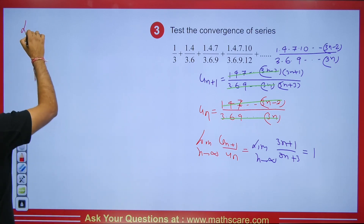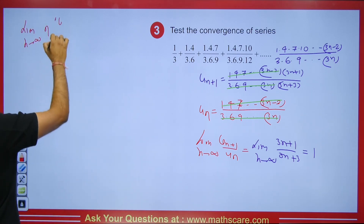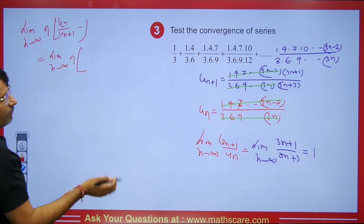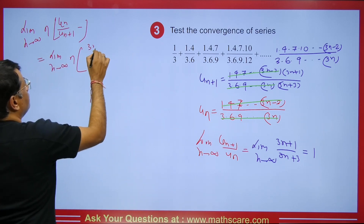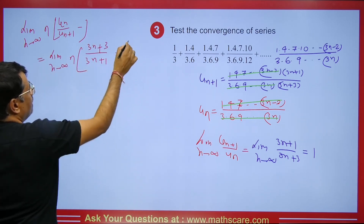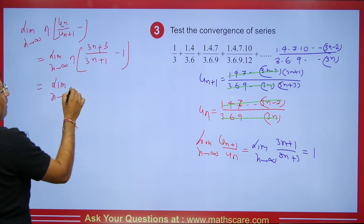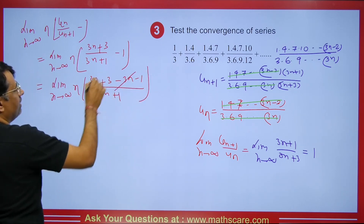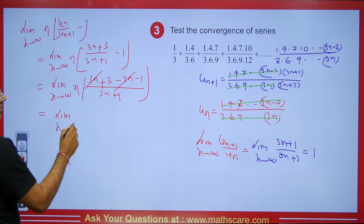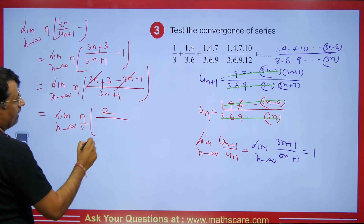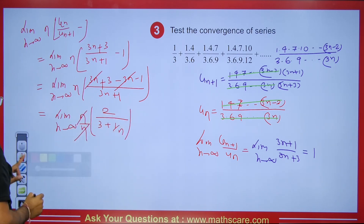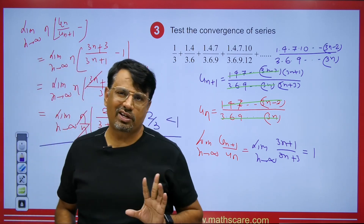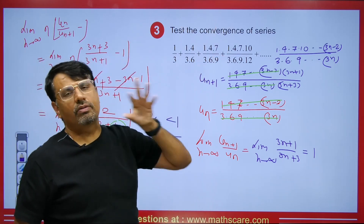Applying Raabe's Test: limit as n tends to infinity of n(u_n/u_{n+1} − 1). Inverting: (3n+3)/(3n+1) − 1. Taking LCM: (3n+3 − 3n − 1)/(3n+1) = 2/(3n+1). Multiplying by n: 2n/(3n+1). Taking n common, n cancels, and as n → ∞ we get 2/3, which is less than 1. Therefore, the series is divergent.